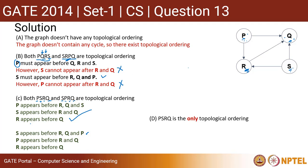Can I write R before Q? Yes, because there is an edge from R to Q, so this is also completely right. Both PSRQ and SPRQ are topological orderings. The fourth option D, PSRQ, is also a topological ordering but it has to be eliminated because both orderings in option C are valid. So option C is the correct option. Hope you have understood this. Thanks for watching.